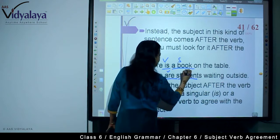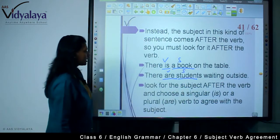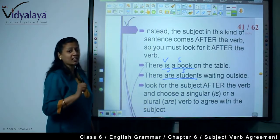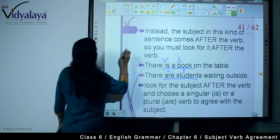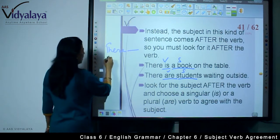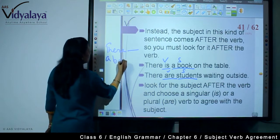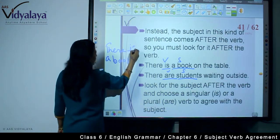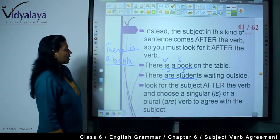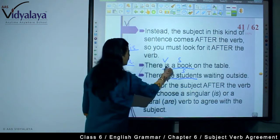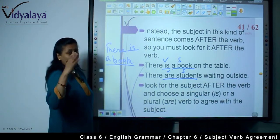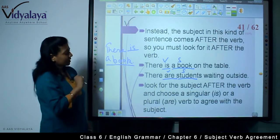So in 'there are students,' the subject follows the verb. If given a fill-in-the-blanks question like 'there ___ a book,' you need to write 'is' because the verb agrees with 'book,' the subject. Even in fill-in-the-blanks, you must put the verb according to the subject that follows.